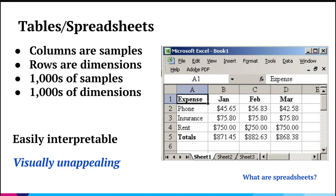An alternative data visualization technique — an older technique — is the use of tables and spreadsheets. The power of these techniques is that you technically can visualize very high-dimensional data. If you think of your samples as your columns and your rows as your dimensions, we can scale to thousands of dimensions and thousands of data points in an Excel sheet. So it's incredibly interpretable — we can see exactly what's happening to every number with as much accuracy as we want. But the problem is it's not very visually appealing, and it takes a long time to visually process information.